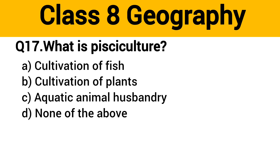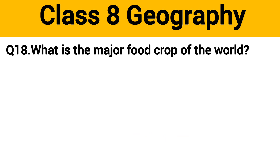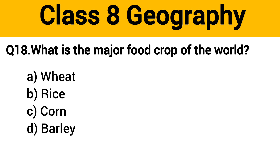Question number 17: What is pisciculture? The right answer is option A: cultivation of fish. Question number 18: What is the major food crop of the world? The right answer is option B: rice.